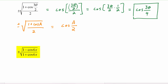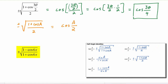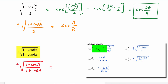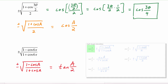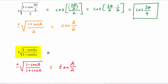For this last example, the piece of the identity it looks most like is plus or minus the square root of one minus cosine a over one plus cosine a, which equals the tangent of a over two. So this expression is going to equal the tangent of its argument, six x, over two, which becomes the tangent of three x.